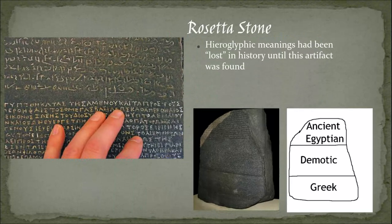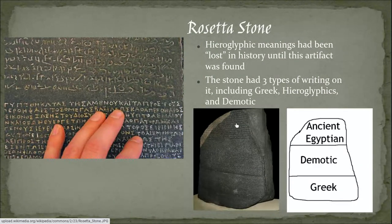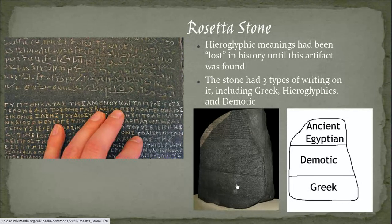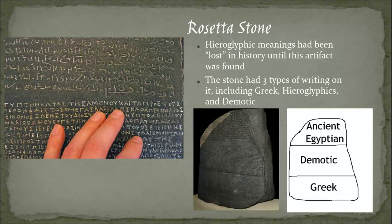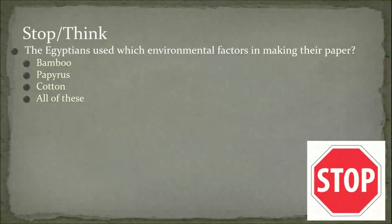We figured out how to read their hieroglyphics thanks to the Rosetta Stone. The French Foreign Legion in the late 1700s to early 1800s found this rock and discovered that the top was written in hieroglyphics, the middle in their other written language called Demotic — which is their official alphabet — and the bottom in Greek, which we still use today. Since we could read the middle and the bottom, and they said the same thing, people sat down and figured out what the hieroglyphics meant. It was found by complete accident but worked out well for us.